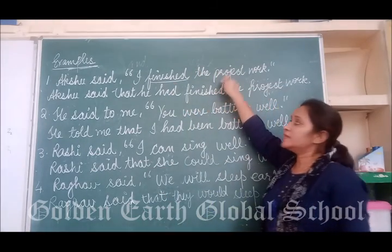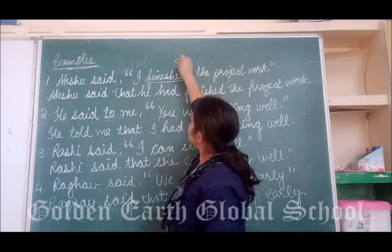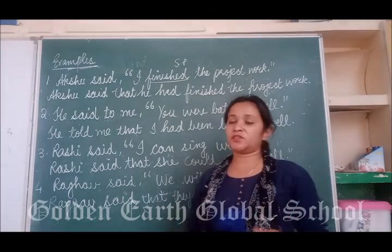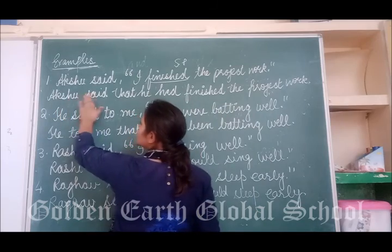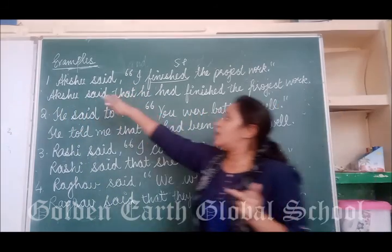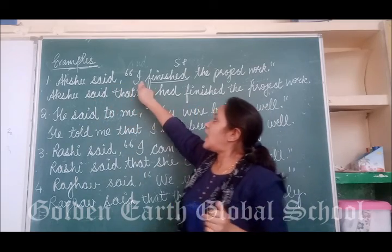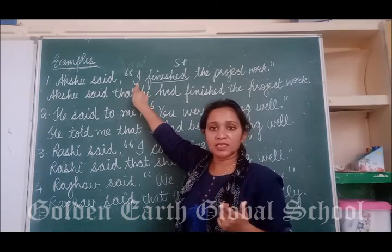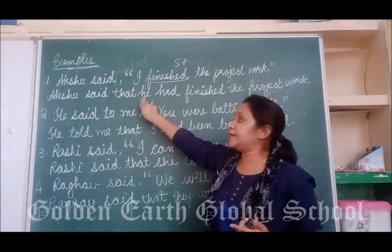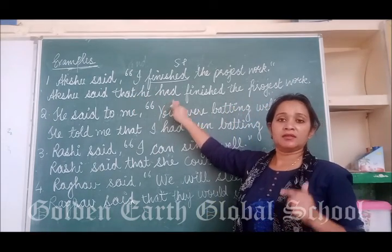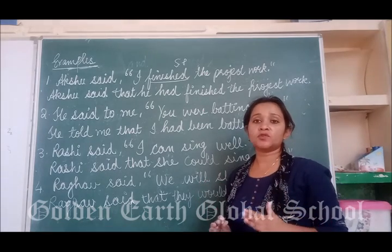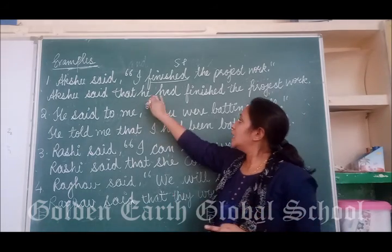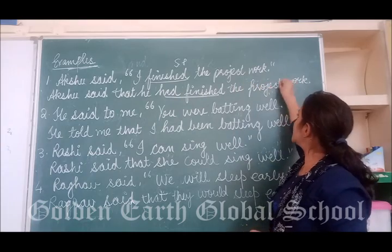This means the reporting speech is in simple past tense. Simple past tense changes into past perfect. So I will write: Akshu said that — instead of commas we use 'that.' Akshu is the name of a boy, so 'I' changes to 'he.' Whether singular or plural, we use only 'had' in past perfect tense, plus the third form of the verb. So: He had finished the project. Full stop.